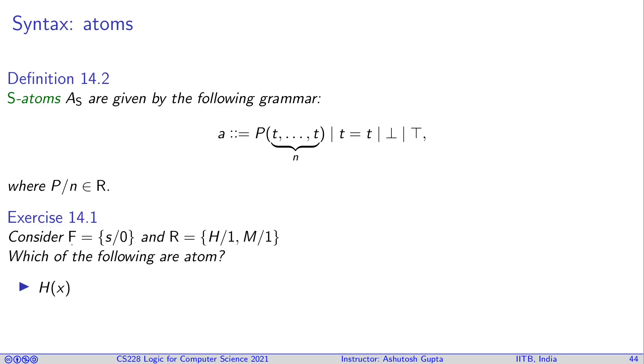Consider this: h of x. Is it an atom? H has parameter one, and x itself is a term, so this is an atom. Is s a term? No, s cannot be a term. If s is a function that doesn't take a parameter, then it's a term. But it's not an atom because there's no predicate on top of it.